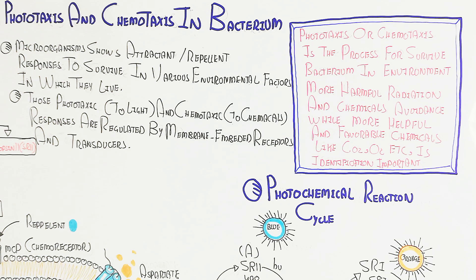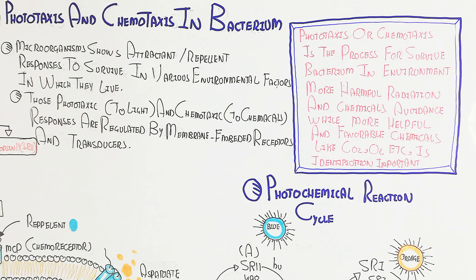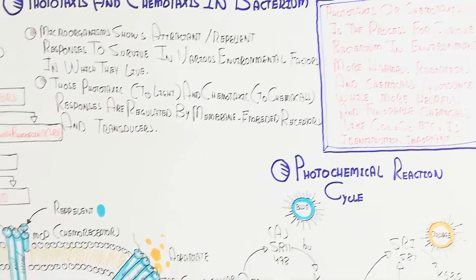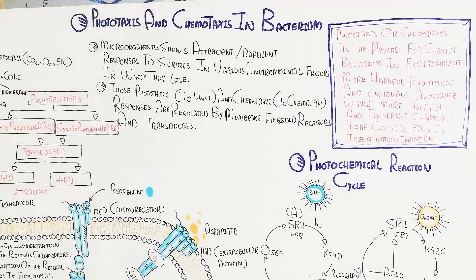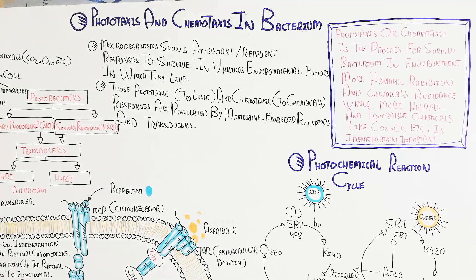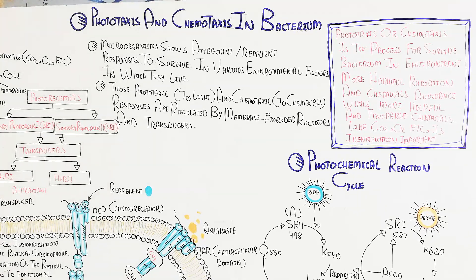Bacteria that can effectively use phototaxis and chemotaxis live longer, compete better, and reproduce more successfully — evolving new recombinant bacteria. Chemicals can also act as pheromones for bacterial reproduction. This has been a general overview of the photochemical reaction cycle and taxis mechanisms.